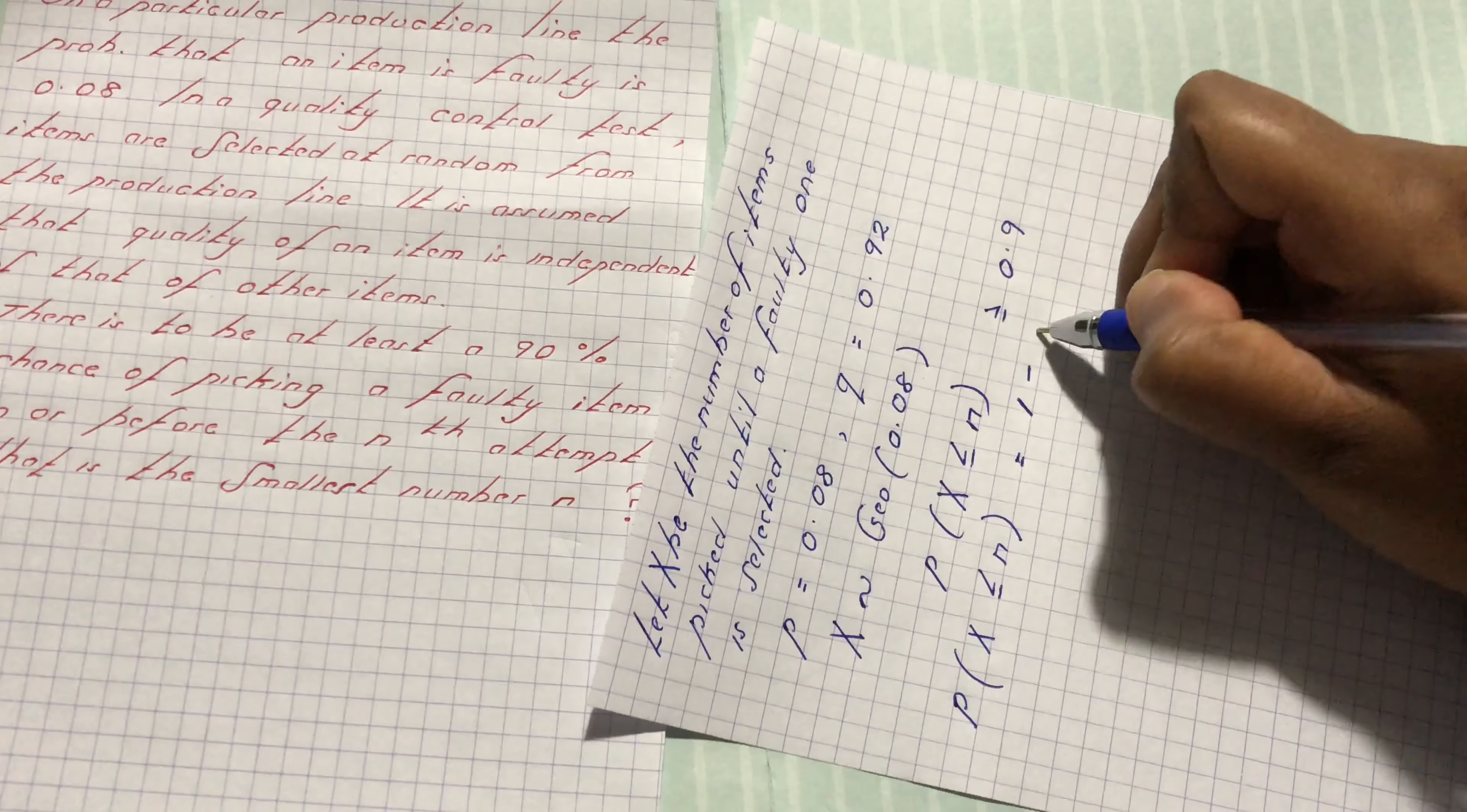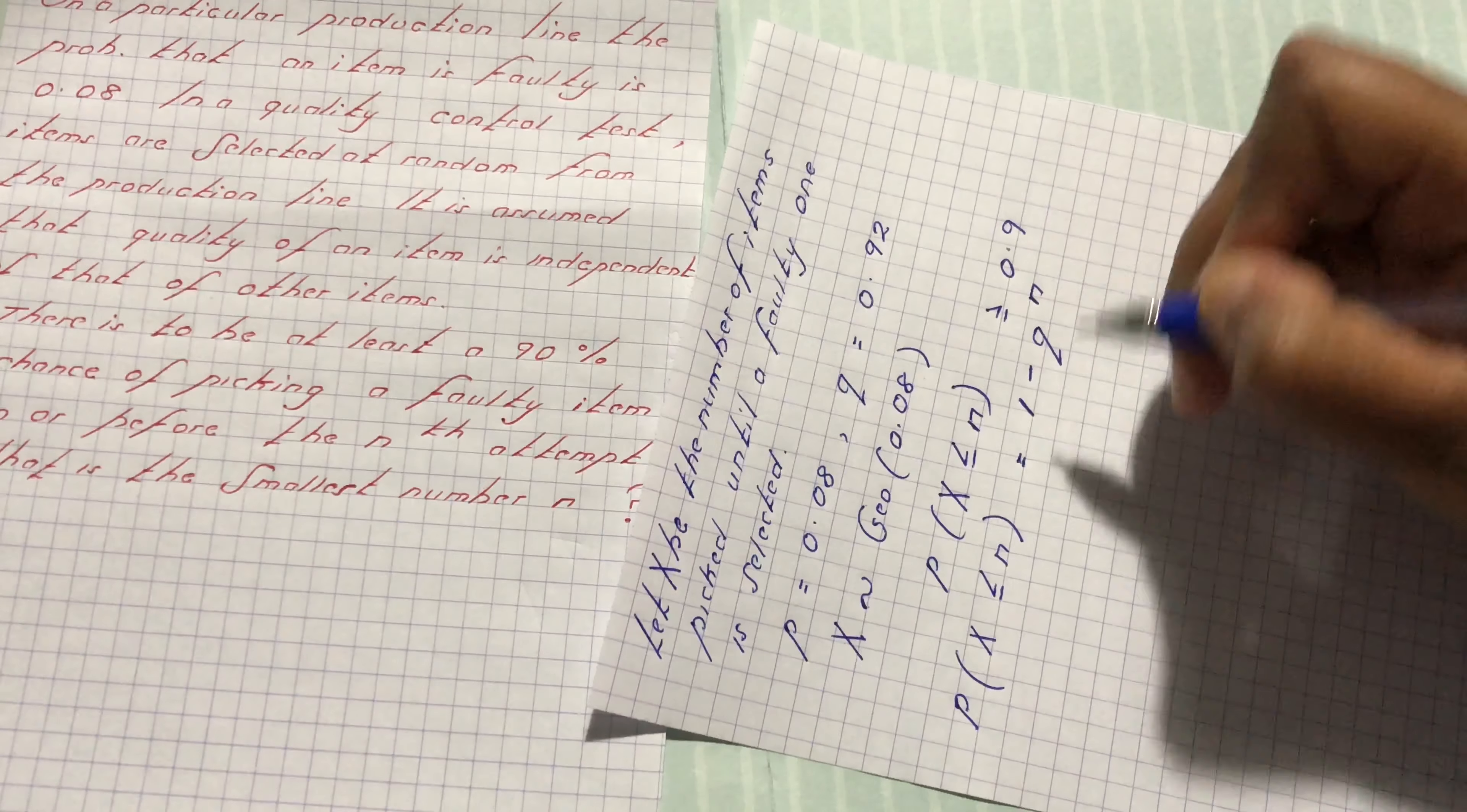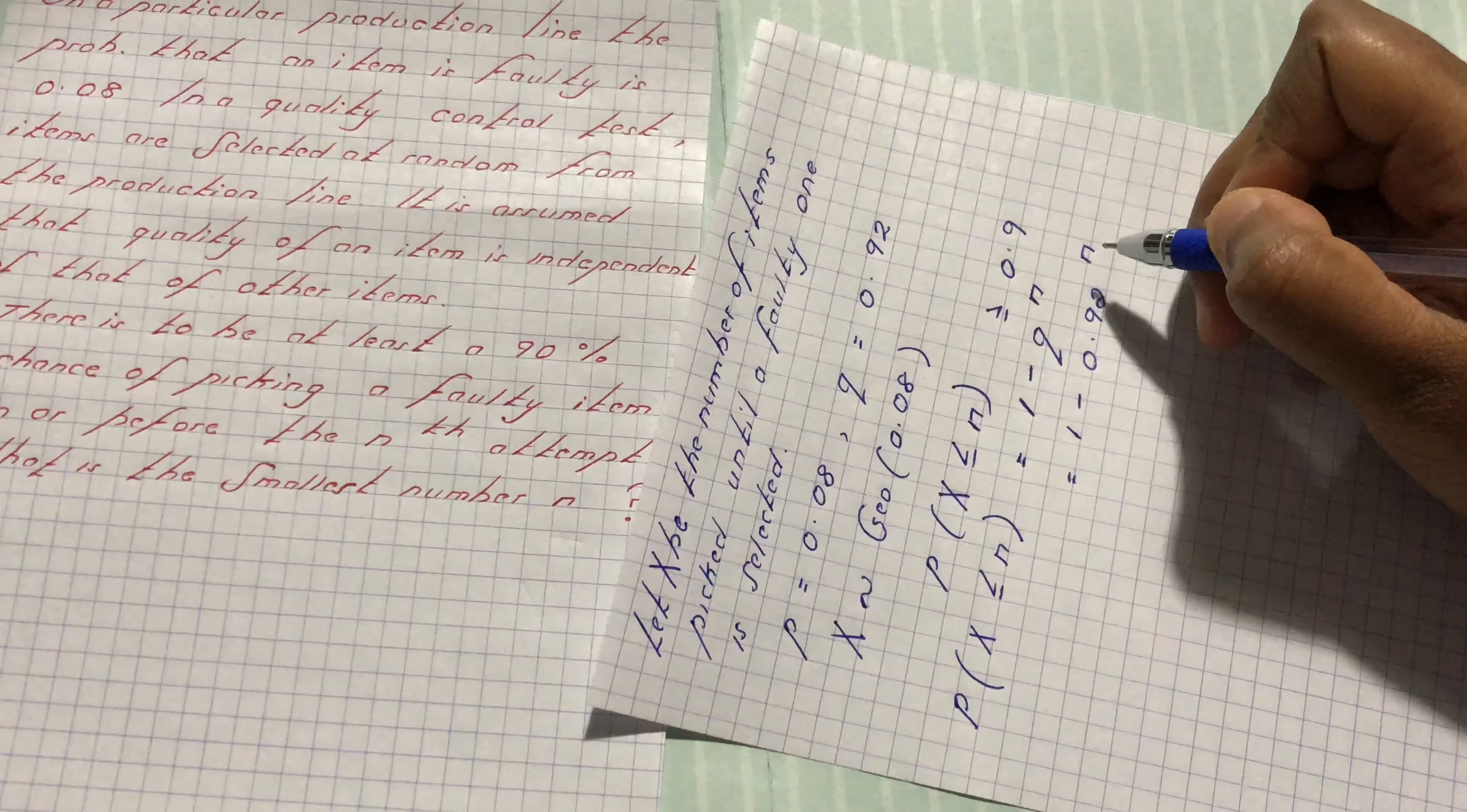1 minus Q power n because our R is what here? N. So it becomes Q power n which is the same as what? 1 minus 0.92 power n.